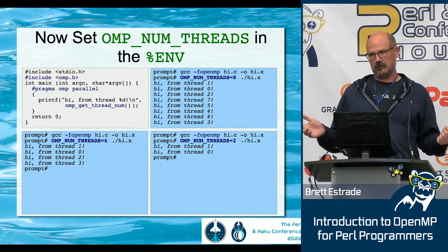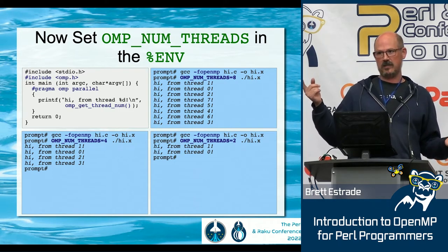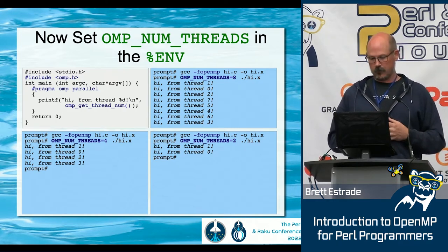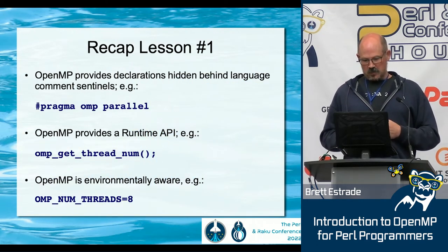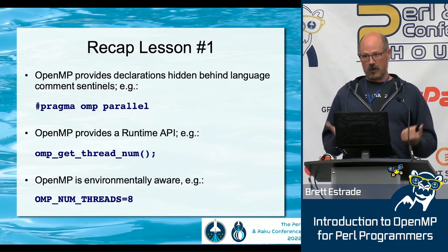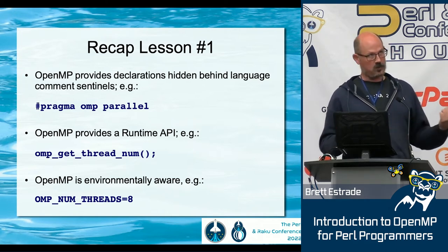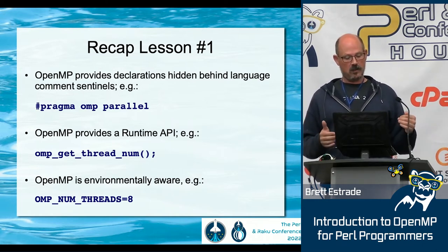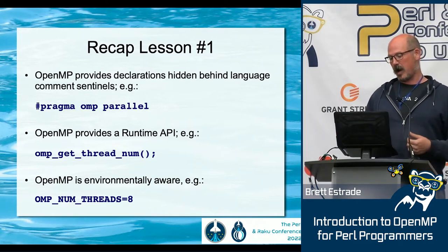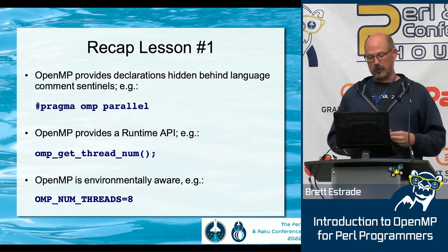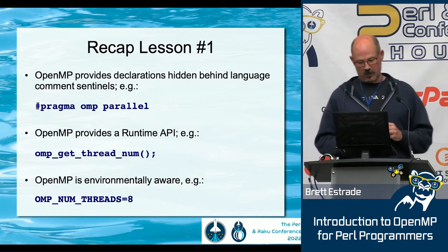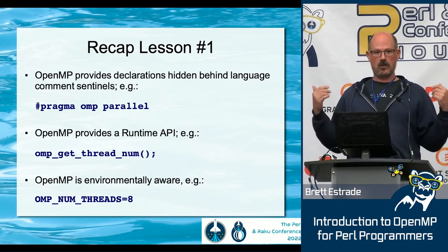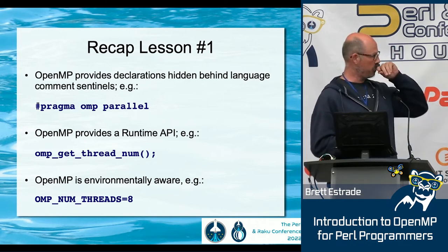OpenMP is really easy — it's like one flag added to GCC and then a couple of directives called pragmas hidden behind some comments. Just recapping: the initial way to parallelize something with OpenMP is to insert a pragma behind a comment and say 'this is parallel' — it's #pragma omp parallel. We use an OpenMP-provided runtime function querying the thread ID. The runtime, when you run it, is aware of the value of certain special environmental variables.